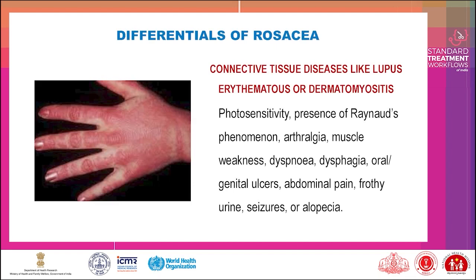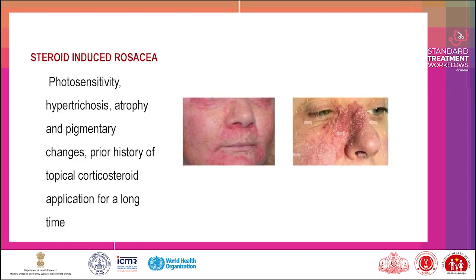Differentials of rosacea: connective tissue diseases like lupus erythematosus or dermatomyositis — photosensitivity, presence of Raynaud's phenomenon, arthralgia, muscle weakness, dyspnea, dysphagia, oral or genital ulcers, abdominal pain, frothy urine, seizures, or alopecia.